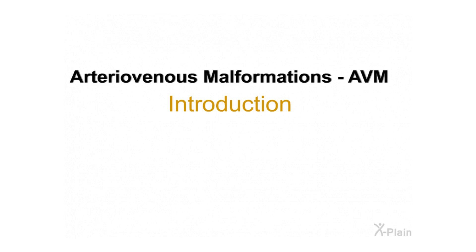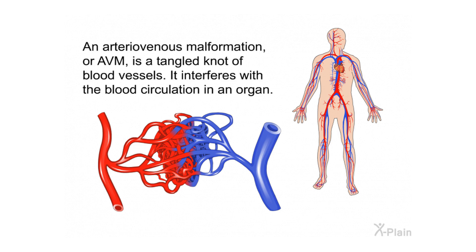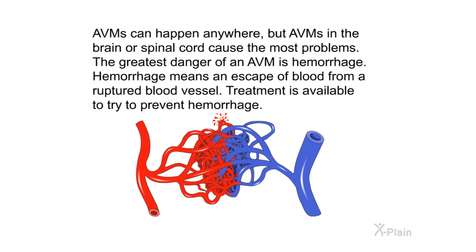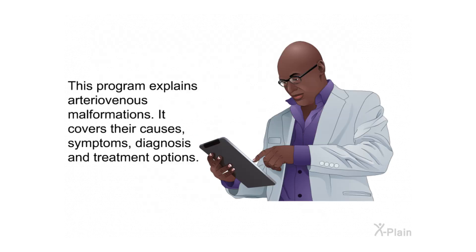Arteriovenous malformation, AVM — introduction. An arteriovenous malformation, or AVM, is a tangled knot of blood vessels. It interferes with the blood circulation in an organ. AVMs can happen anywhere, but AVMs in the brain or spinal cord cause the most problems. The greatest danger of an AVM is hemorrhage — an escape of blood from a ruptured blood vessel. Treatment is available to try to prevent hemorrhage.